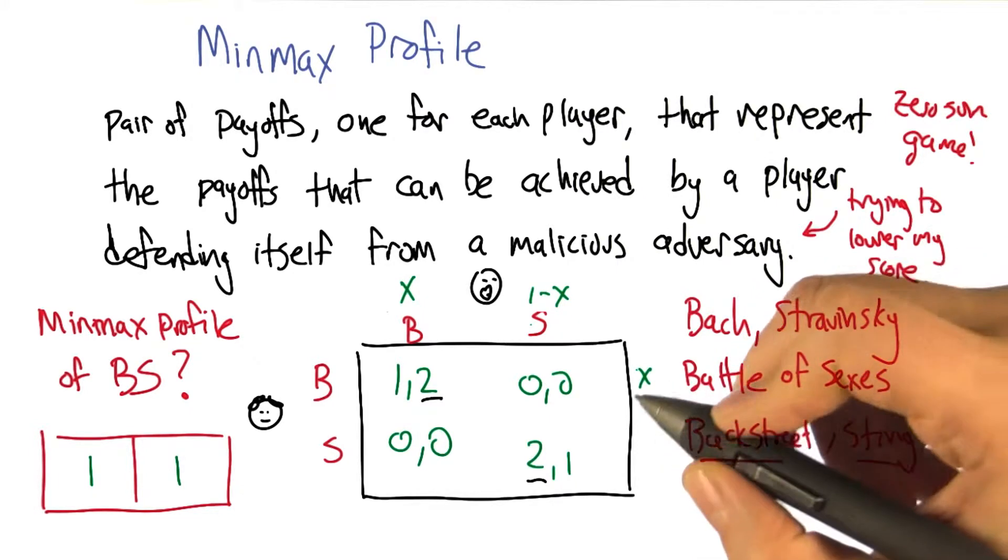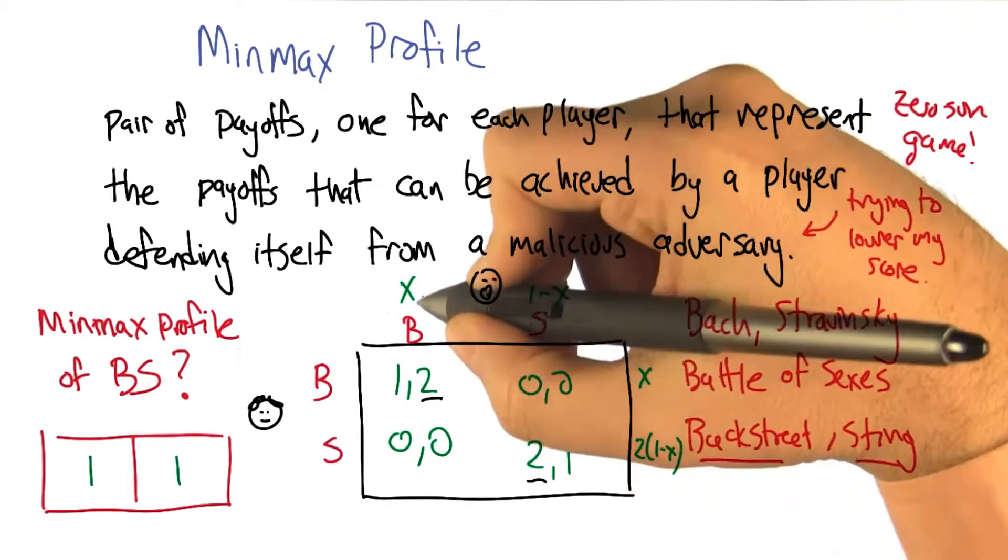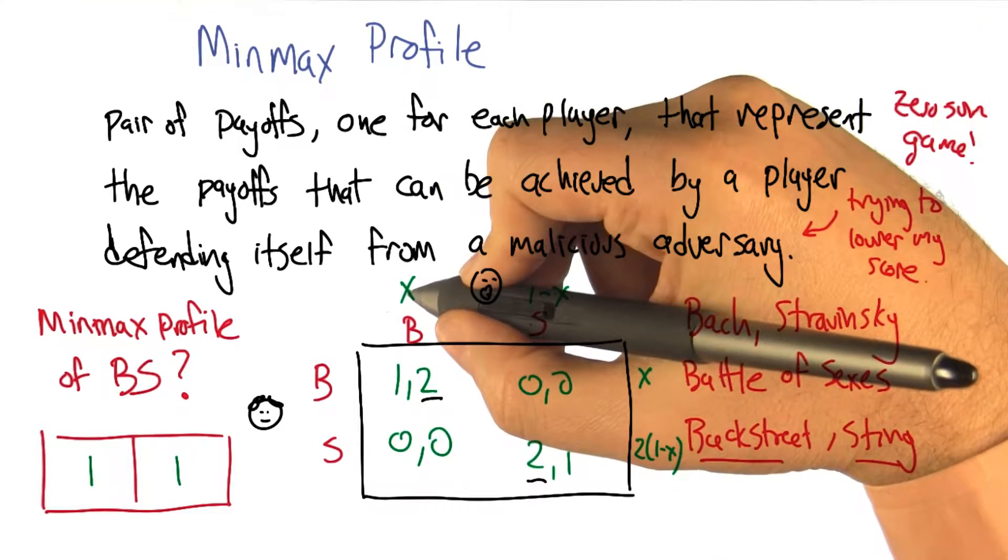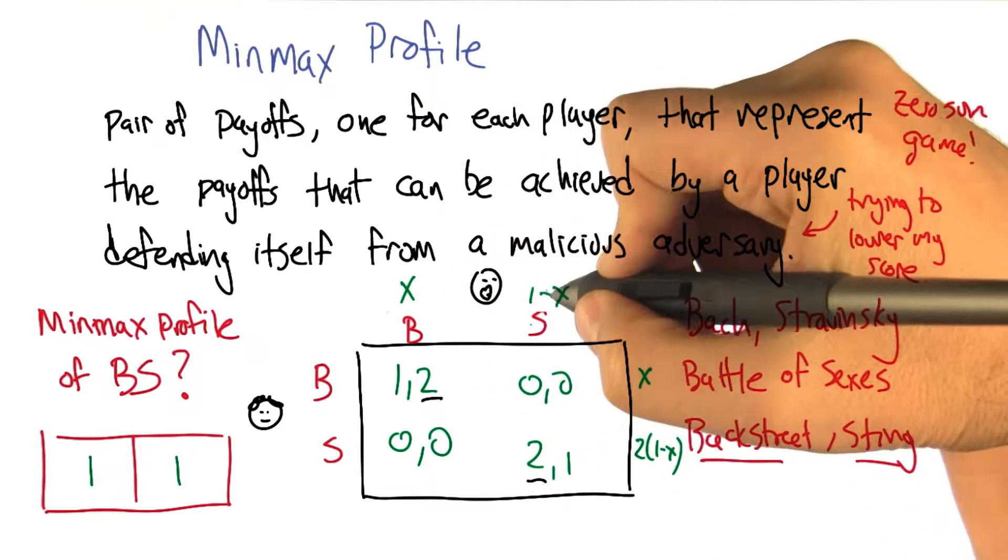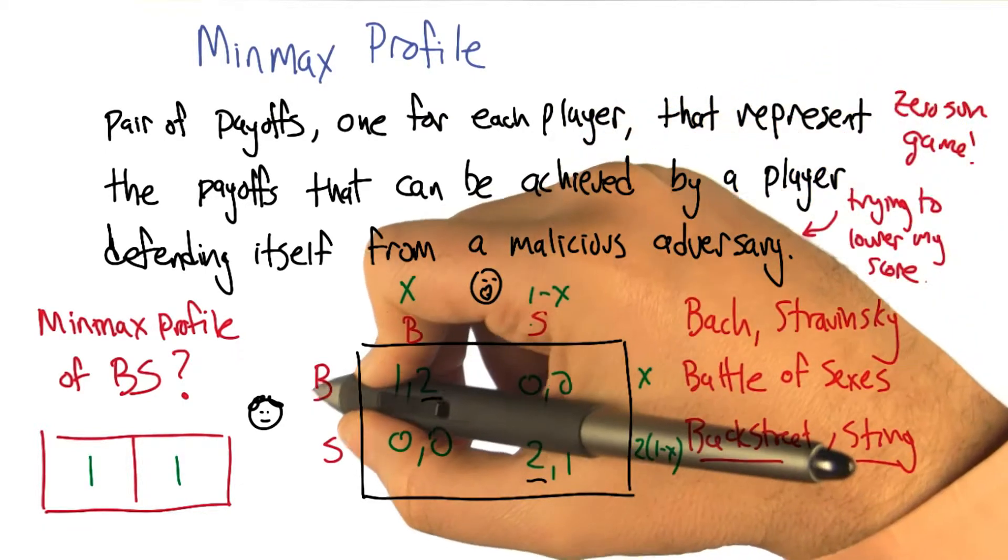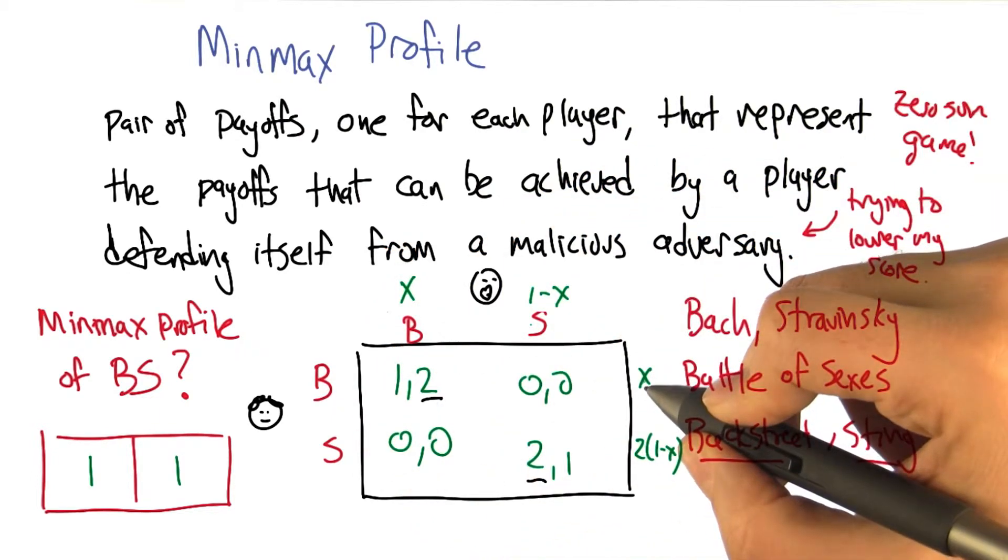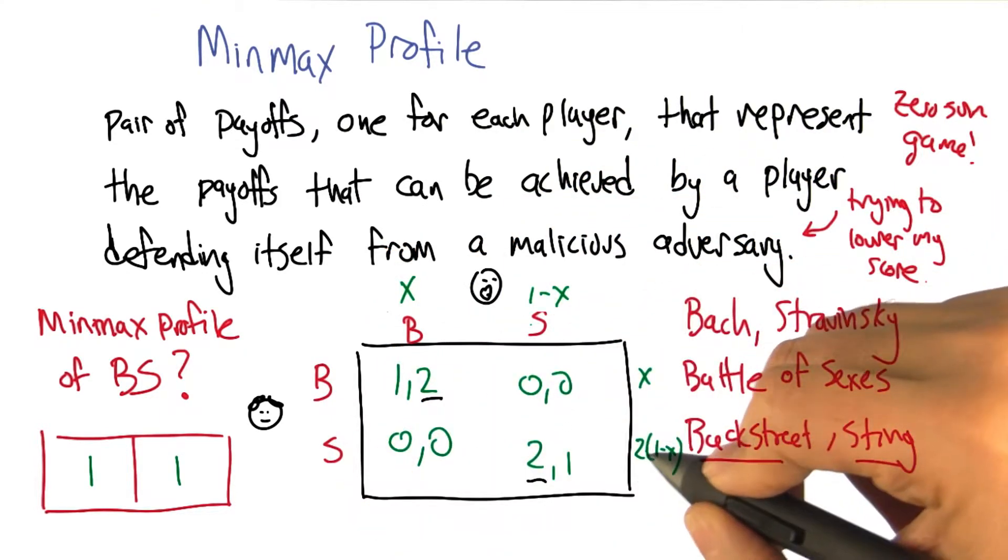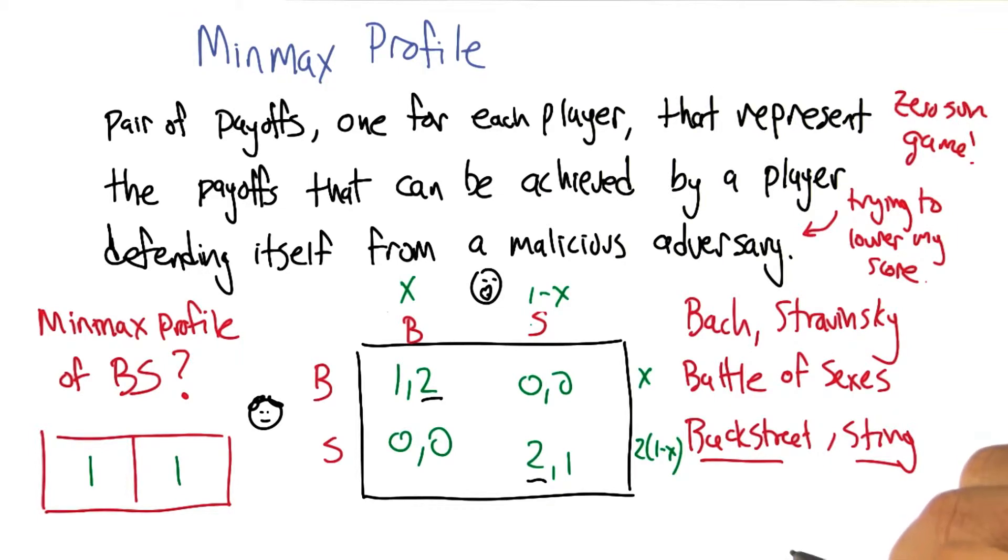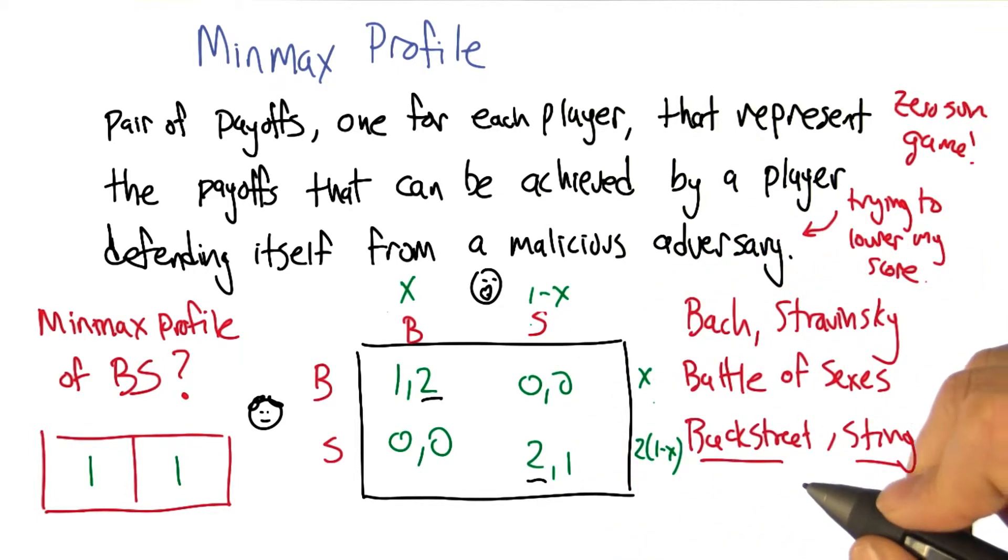Okay. So you just do the math. All right. So if Smooth chooses Backstreet Boys with probability x and Sting with probability 1 minus x, then Curly for choosing Backstreet Boys will get x on average, and for choosing Sting will get 2 times 1 minus x on average. And the useful point is going to be to discover when these are equal to each other.